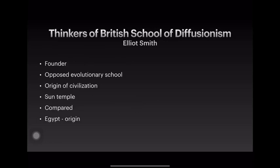Coming to the thinkers of the British school of diffusionism, we first have Elliot Smith. He is considered to be the founder of the British school of diffusionism and opposed the evolutionary school. He published a book called The Origin of Civilization. He went to Egypt and studied Egypt, Egyptians, and the Sun Temple. He compared Egypt and Cambridge in Britain, found many similarities, and emphasized that Egypt is the origin of cultural civilization. He was a diffusionist as well as an Egyptianist.